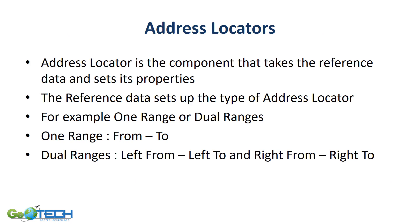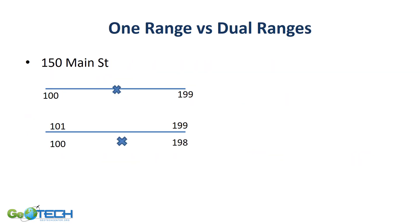We take that center street line file and put it into a tool called an address locator. The address locator allows us to decide what parts we want the locator to use. You can also decide to do a one range or dual ranges. With dual ranges, you have left and right. With a one range, you just have a from and a to. In a one range, there is only 100 to 199, and the geocoded point will end up right in the middle of your line. If you have a left and right node, the geocoded point will end up on the correct side of the street.